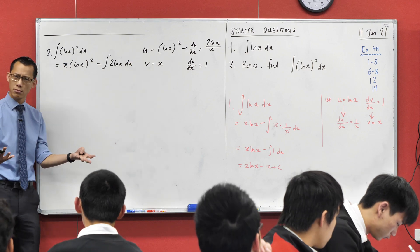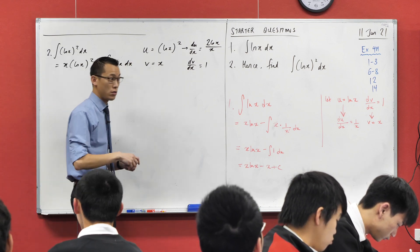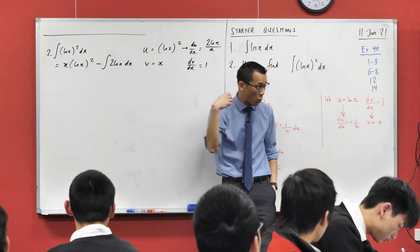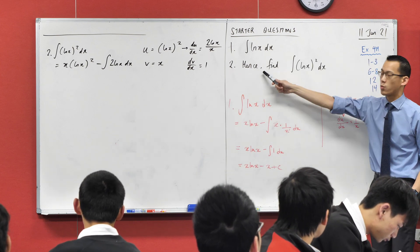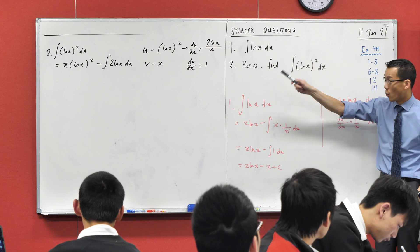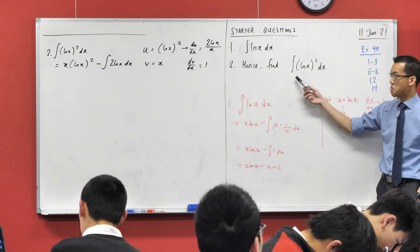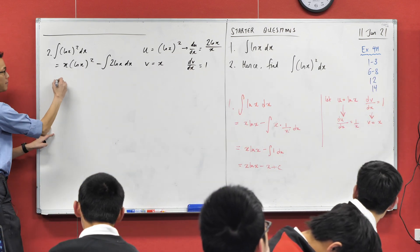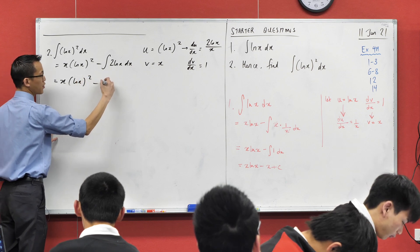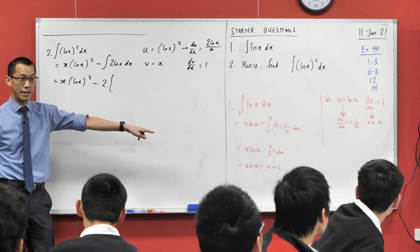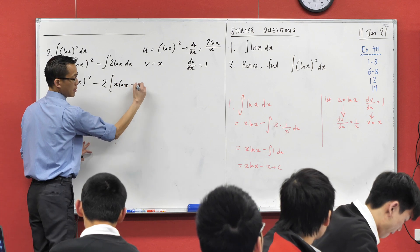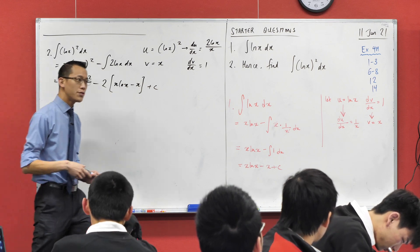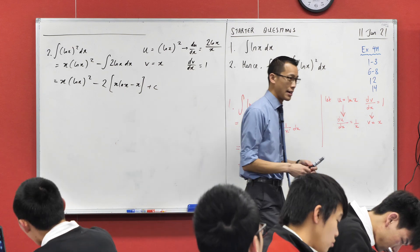Here we go: x(log x)² minus, help me out, say it with me, integral of 2 log x because these x's will cancel, dx. I'm trying to ring this bell from Tuesday - we've gone from integration by parts and created something which requires another application of integration by parts, which is why there's this 'hence' here. Thankfully we've already worked out what that particular integral is, we've just got minus two of them.